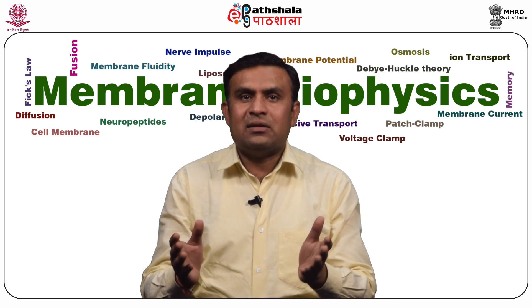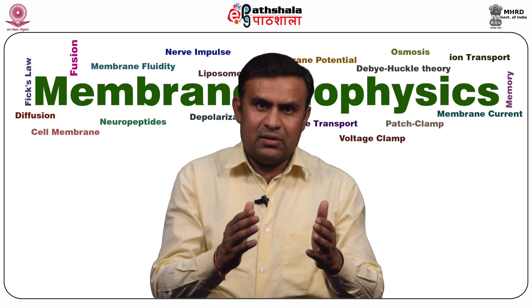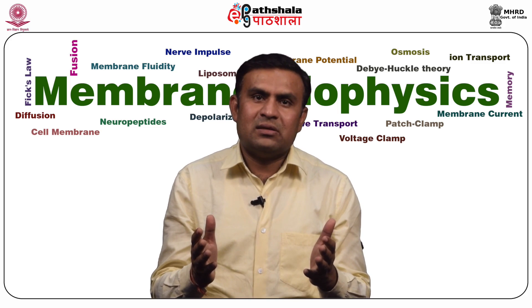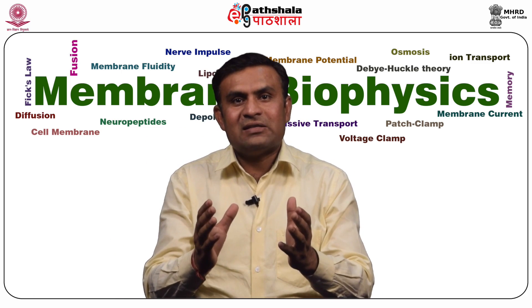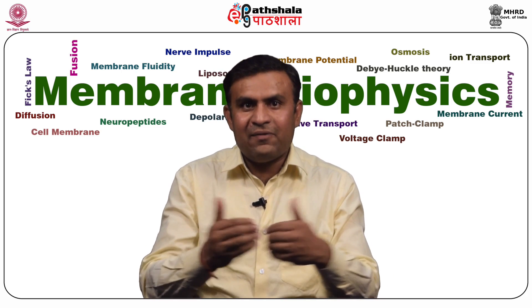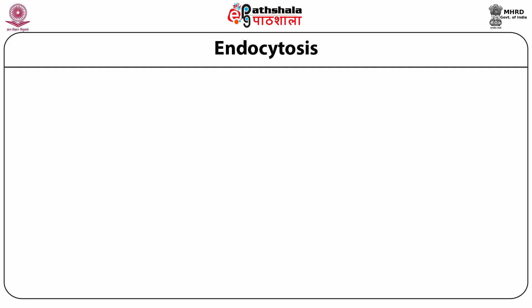Exocytosis means out of the cell. In this phenomenon, the fusion of vesicles with the cell's membrane releases content to the surrounding. During endocytosis, vesicles form from the cell membrane, enclosing material near the cell surface and bringing it into the cell. This is the main difference between exocytosis and endocytosis. Macromolecules intended to be internalized from the extracellular environment are dependent on vesicular transport, which is very important for maintaining the intracellular environment.